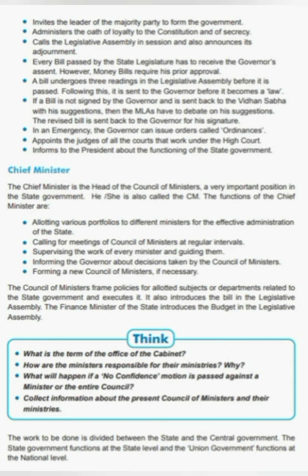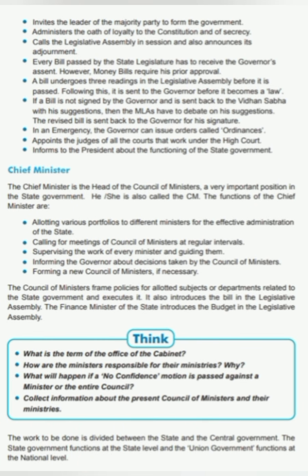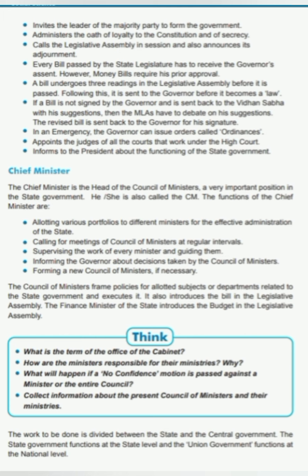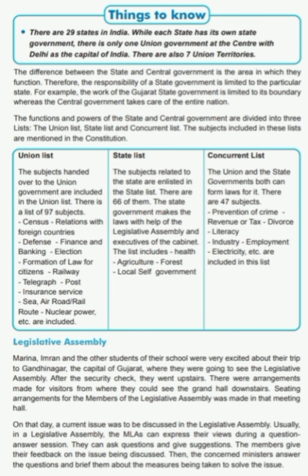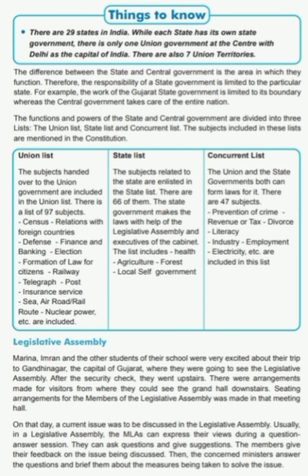The work to be done is divided between the State and the Central Government. The State Government functions at the state level, and the Union Government functions at the national level. There are 29 states in India, each with its own State Government, while there is only one Union Government at the Centre with Delhi as the capital of India. There are also 7 Union Territories. The responsibility of a State Government is limited to its particular state — for example, the Gujarat State Government is limited to its boundary, whereas the Central Government takes care of the entire nation.